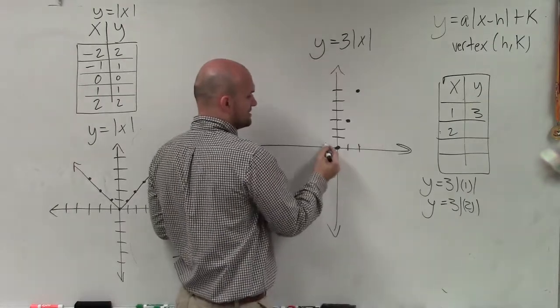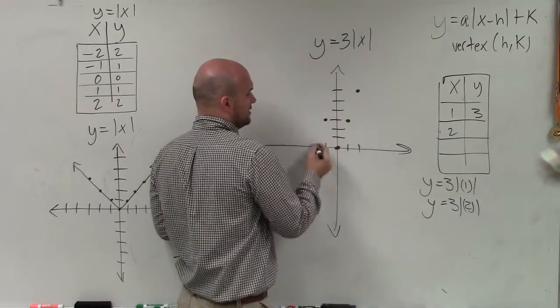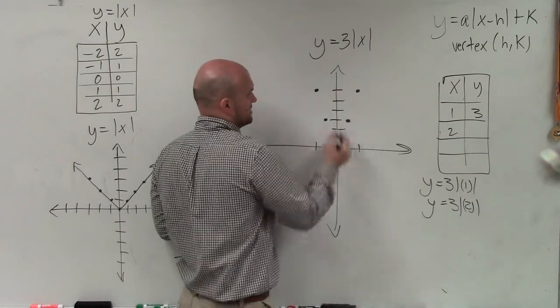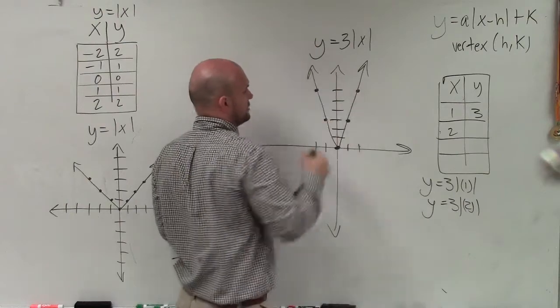Then I can reflect over my axis of symmetry. Instead of going to the right one up 3, I can go to the left one up 3. To the left 2 up 6. And therefore, I can now graph my linear equation.